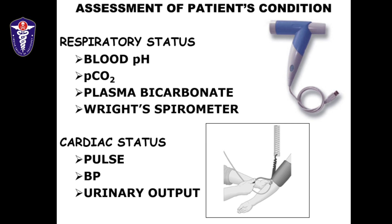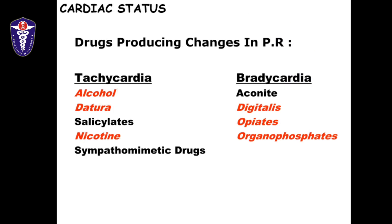Moving on to cardiac status, the key parameters are the patient's pulse, blood pressure, and urinary output. The key parameter is heart rate — there can be tachycardia or bradycardia. Common drugs causing tachycardia include alcohol, datura, nicotine, salicylate, and sympathomimetic drugs. Common drugs causing bradycardia include organophosphates, opiates, digitalis, and aconite.